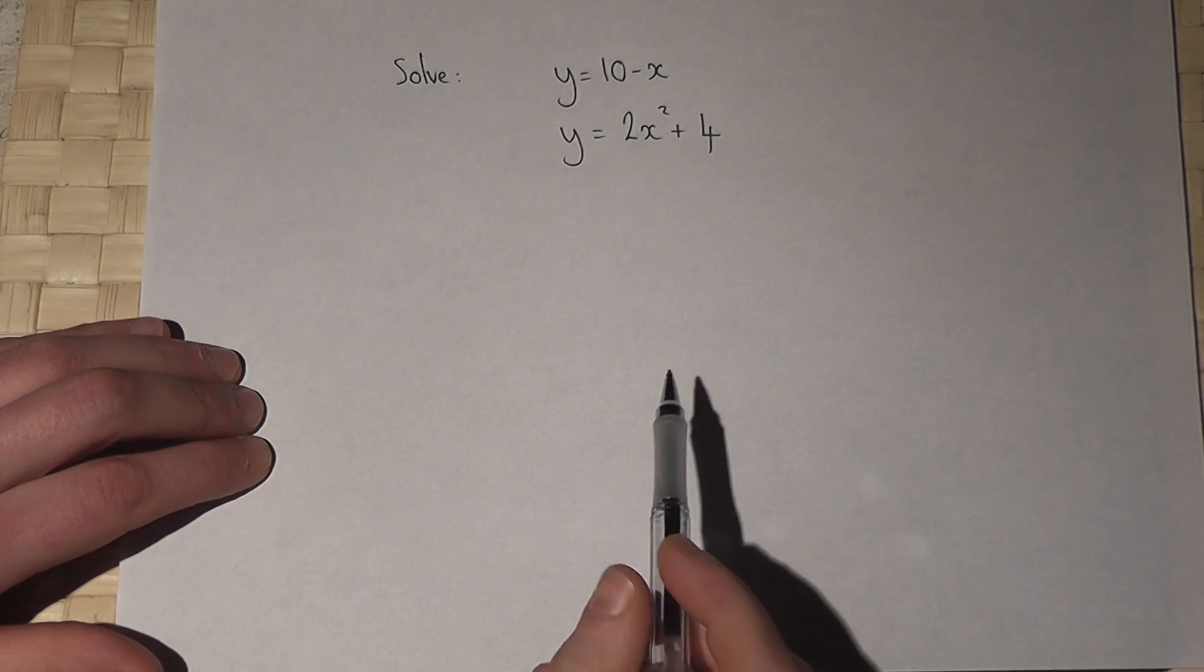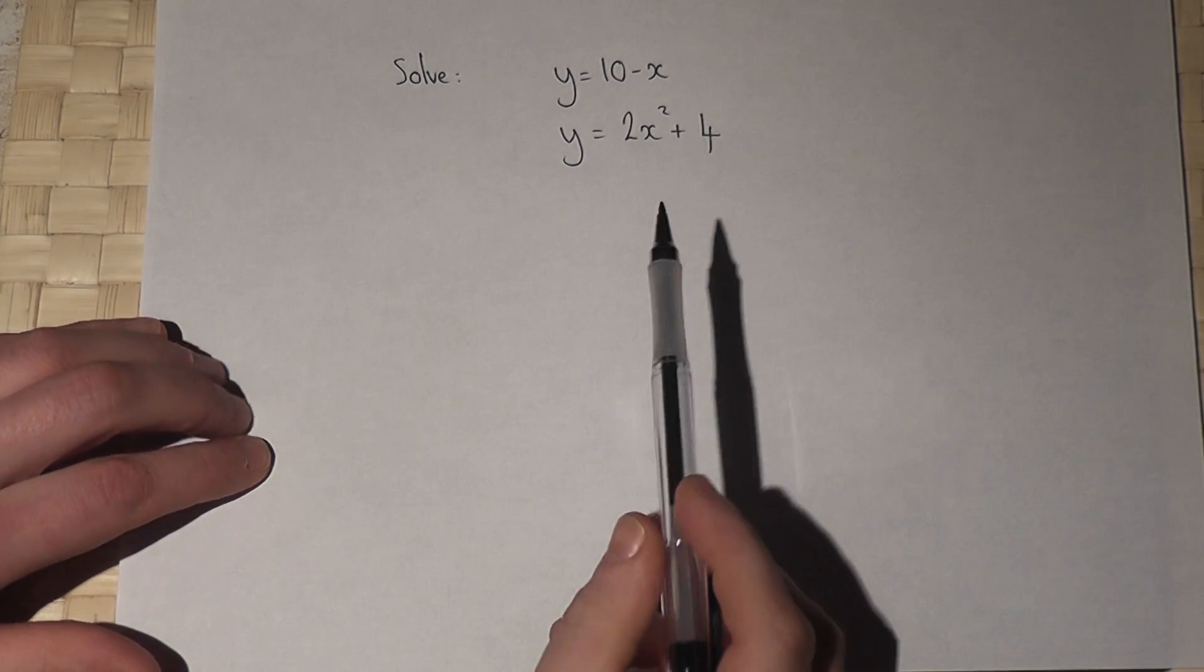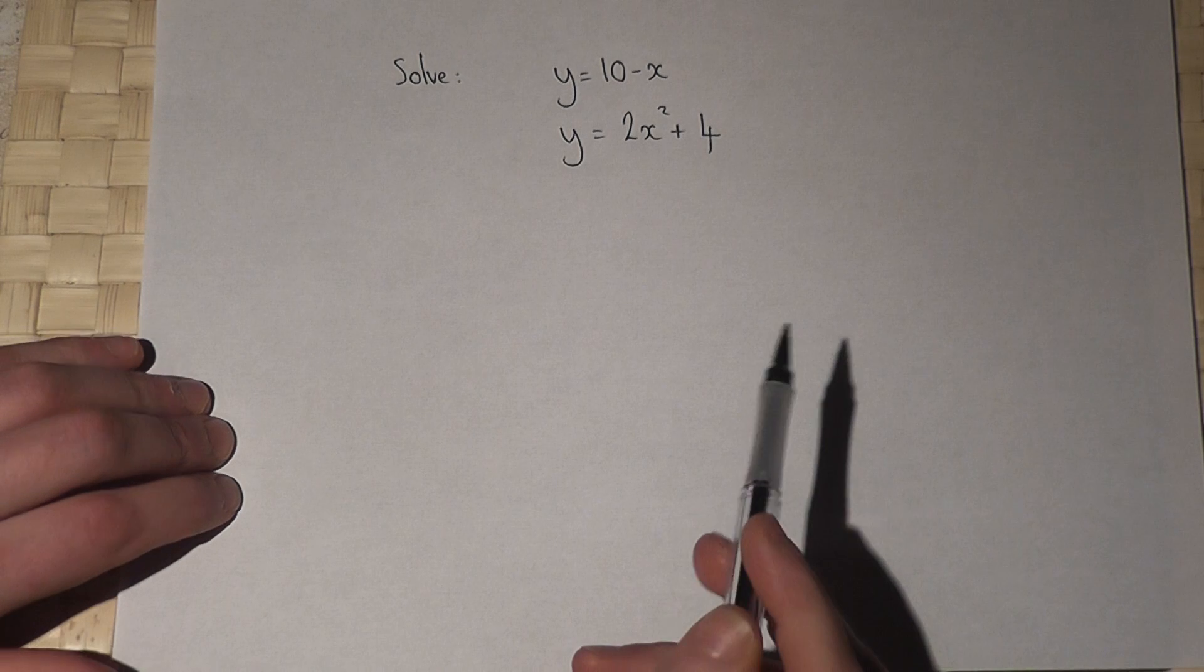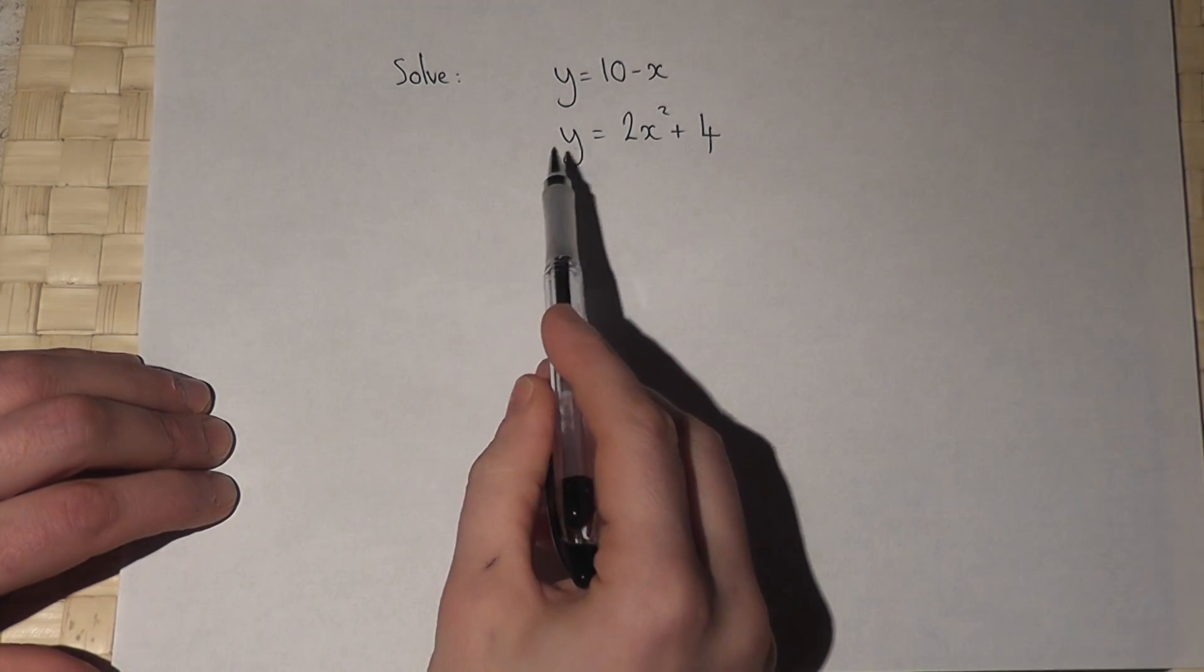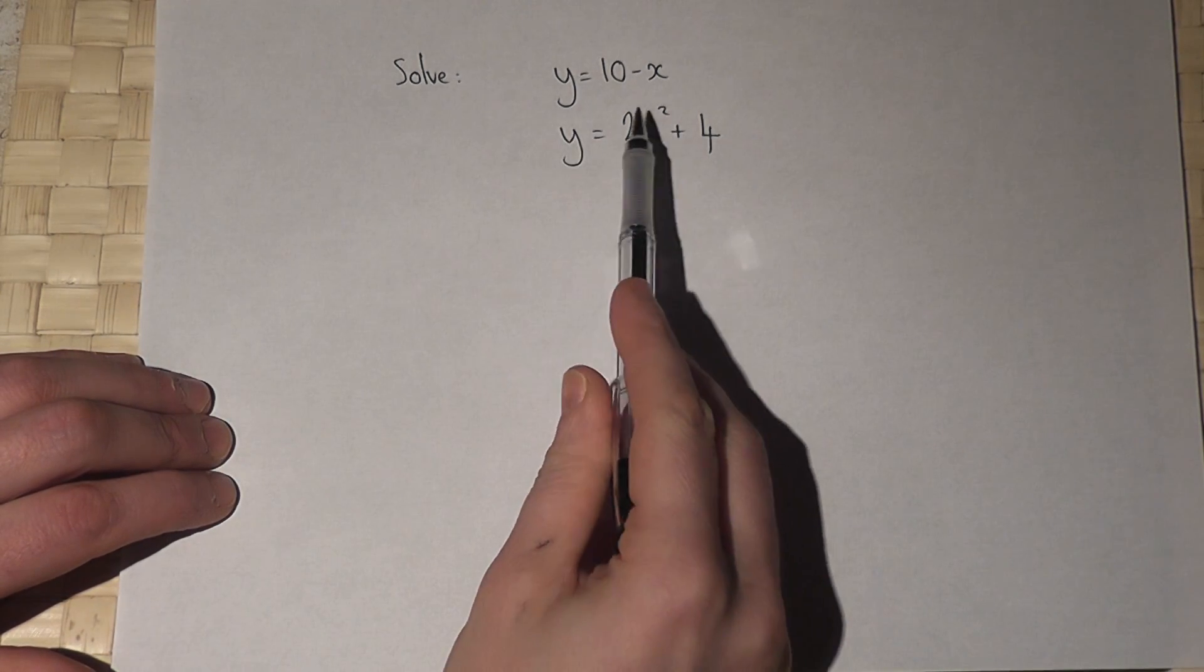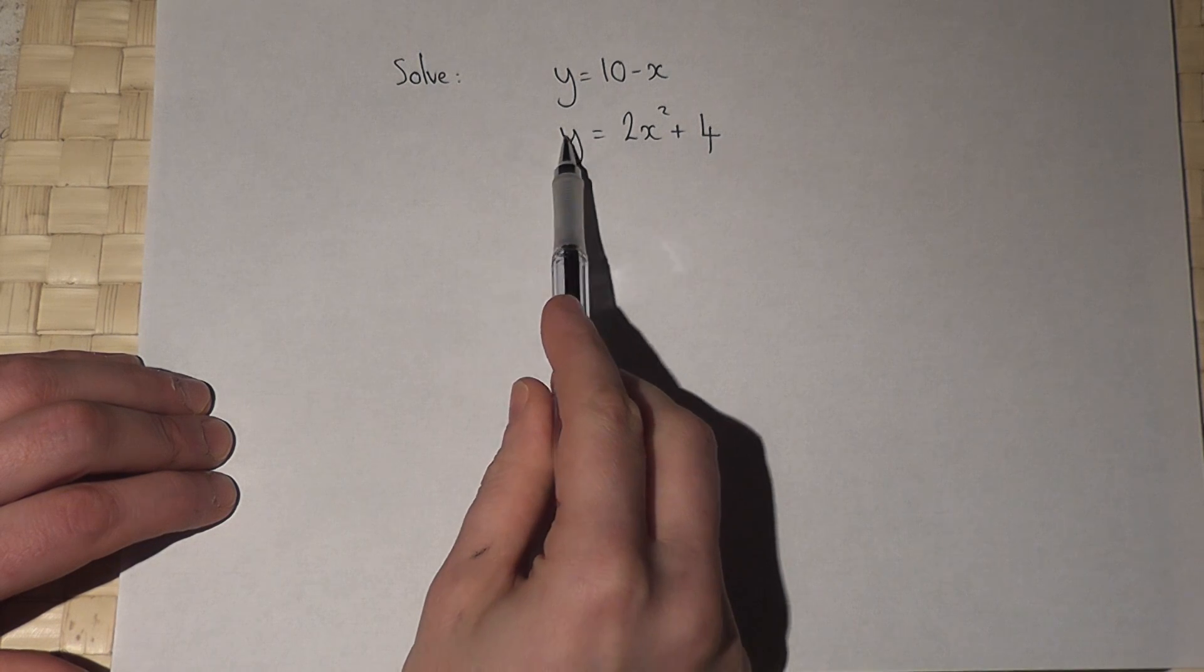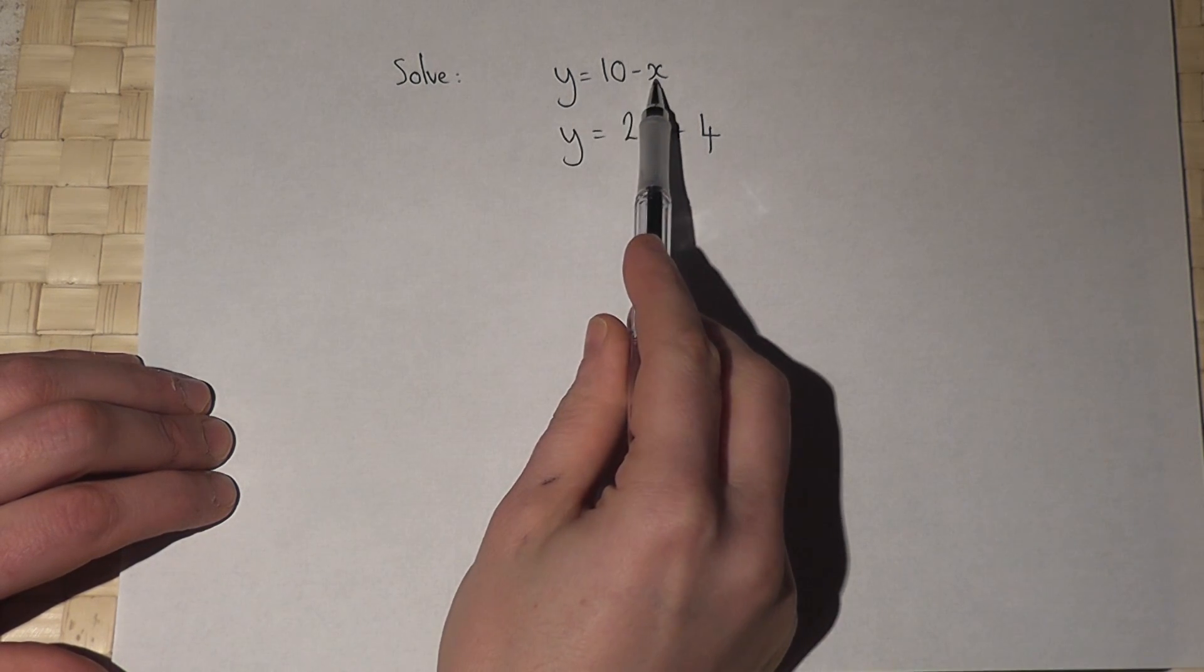This question asks us to solve the following pair of quadratic simultaneous equations. We know that y equals 2x squared plus 4, but we also know that y equals 10 minus x.